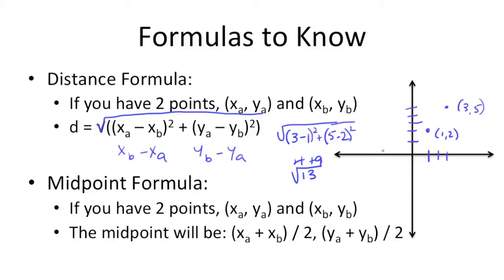So if we have these two points again, (3, 5) and (1, 2), the midpoint halfway between them would be xa plus xb, which is 1 plus 3 divided by 2, and 2 plus 5 divided by 2. So 1 plus 3 is 4, divided by 2 is 2.